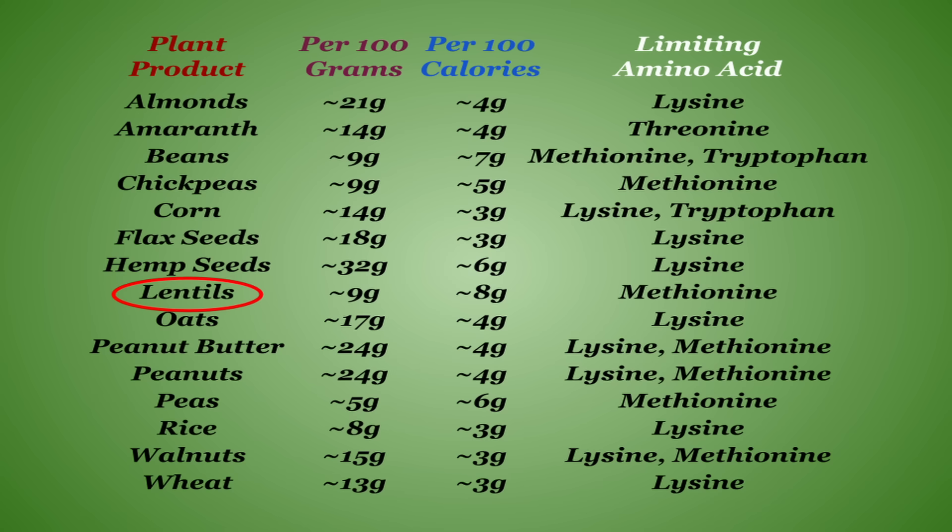So if you were to say, only eat lentils as your protein source, you would have an extremely hard time consuming methionine, its limiting amino acid, and your body could fail due to it not having what it needs to make the proper proteins.